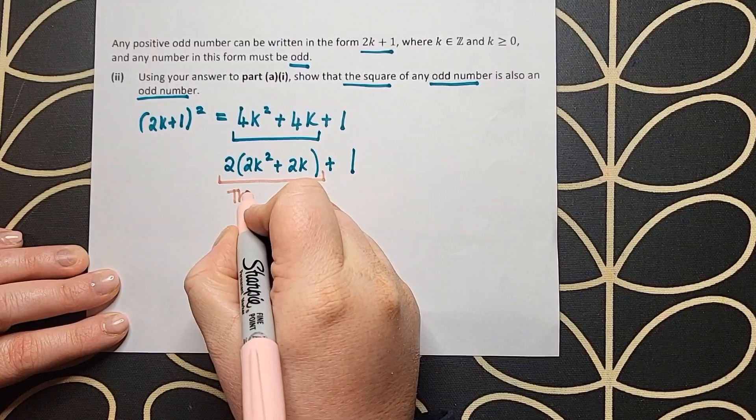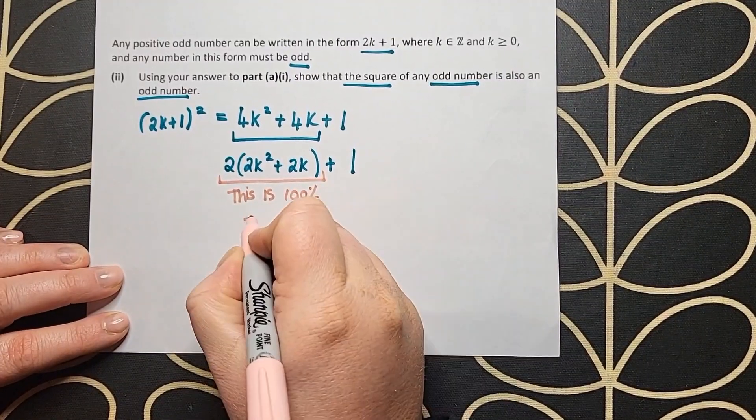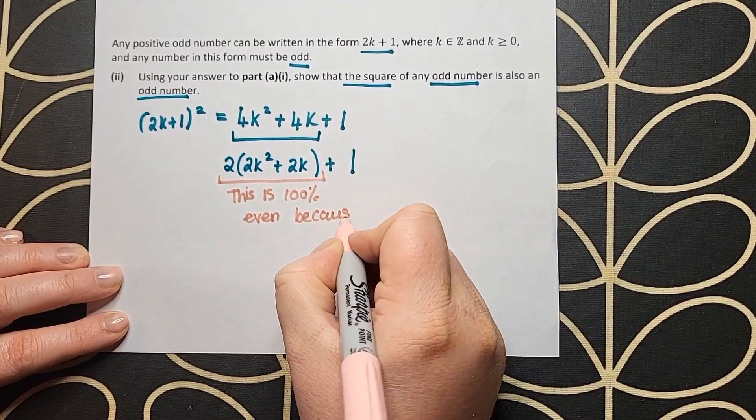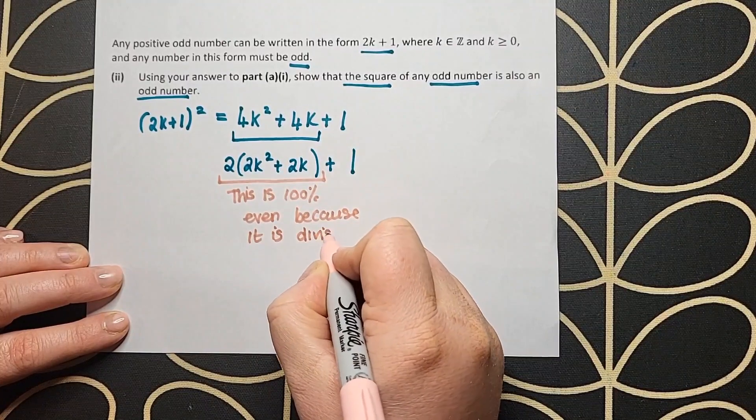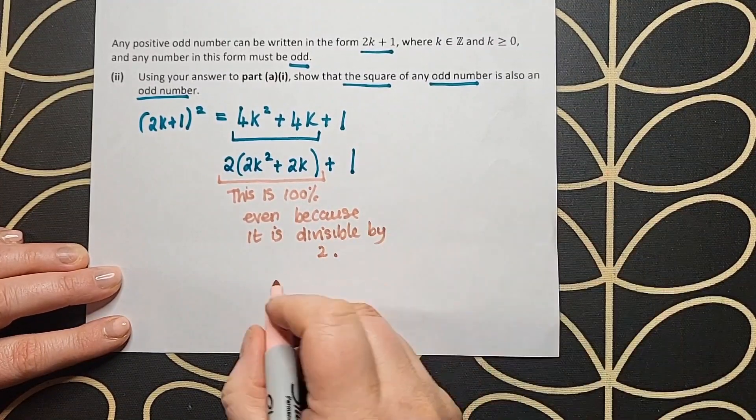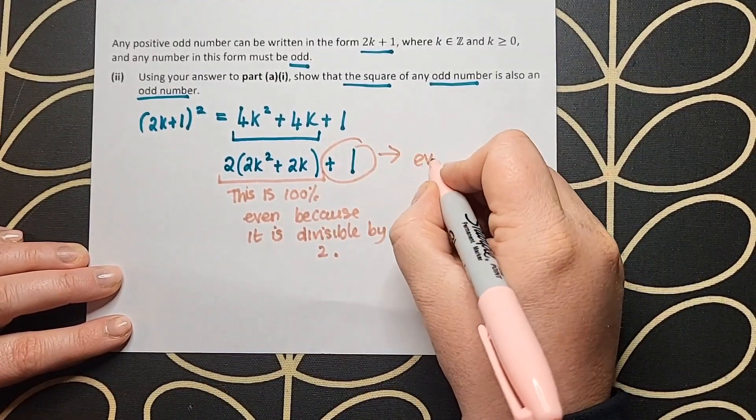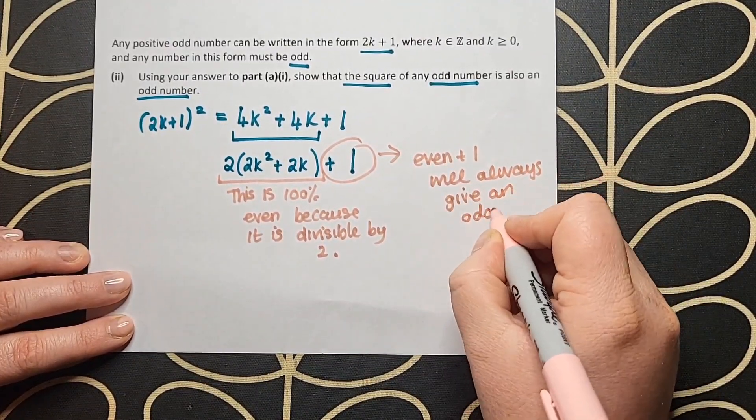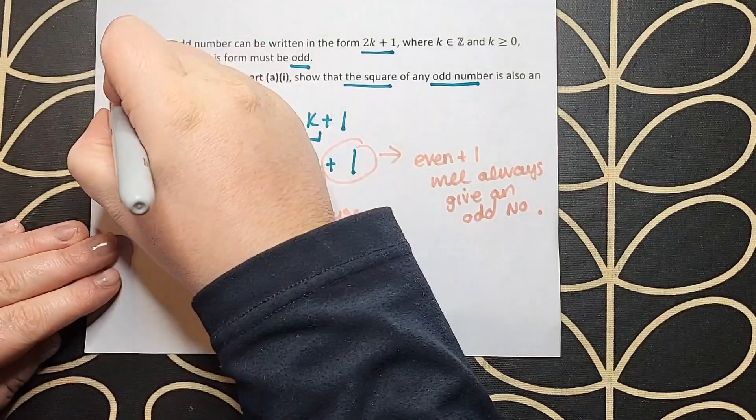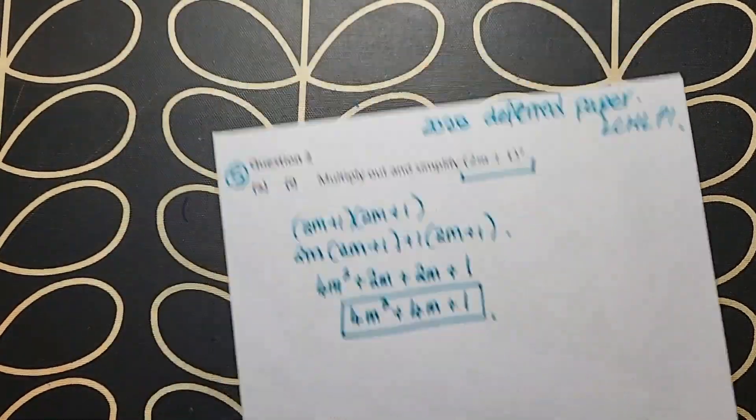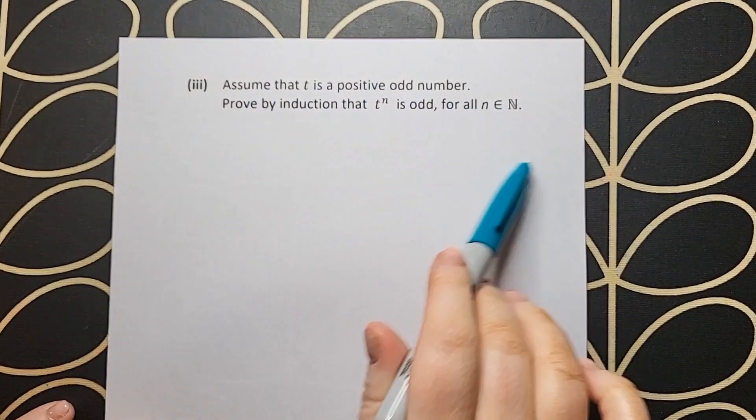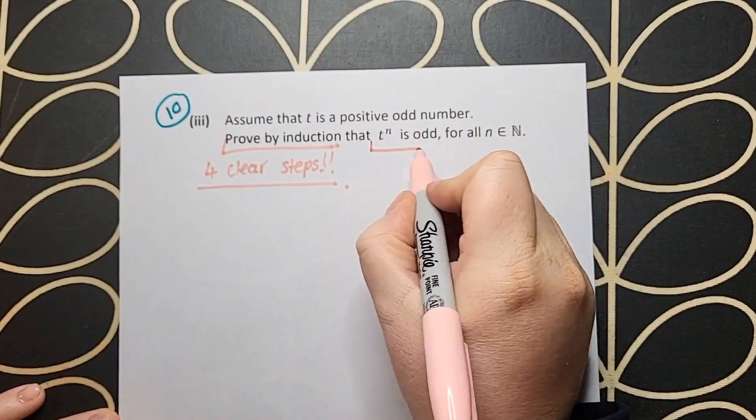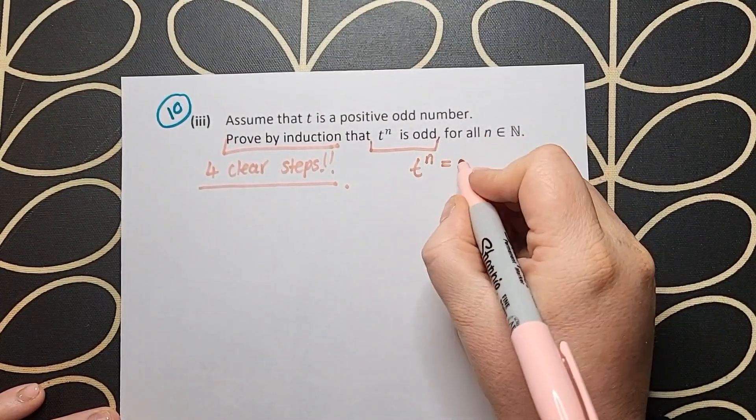Now I need to show that it's odd. If we factorize the 4k squared plus 4k, we see that it is divisible by 2, and anything divisible by 2 is even. Anything even plus 1 will turn into an odd number. By doing this work here, we have proven that (2k + 1) squared is odd. That was a 5 mark question.